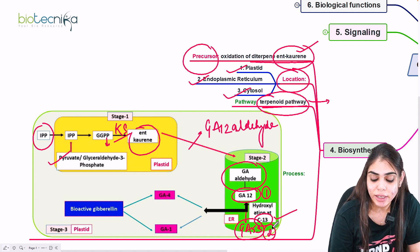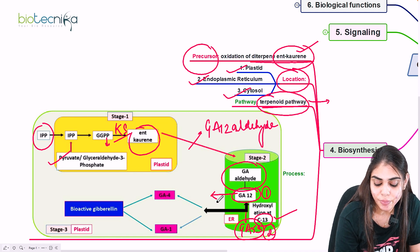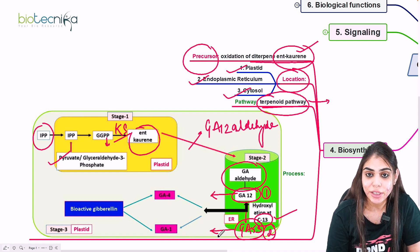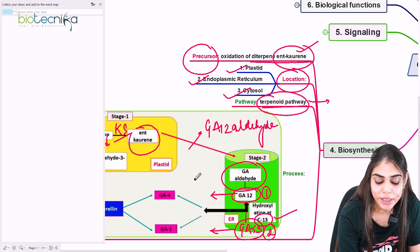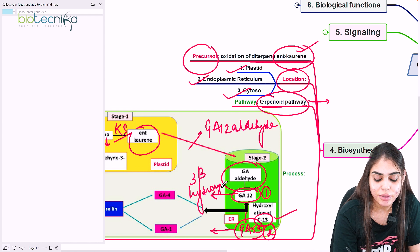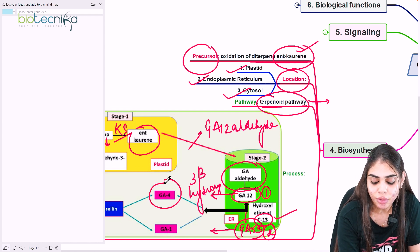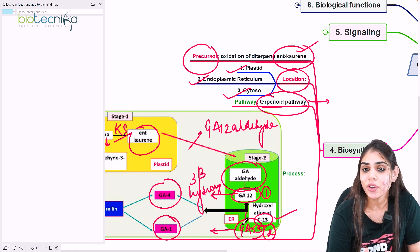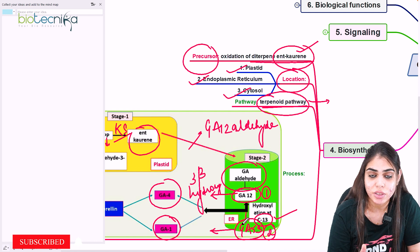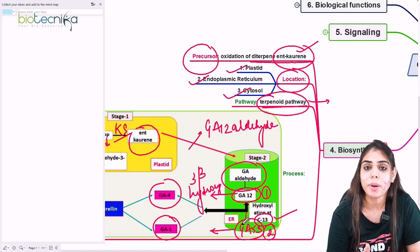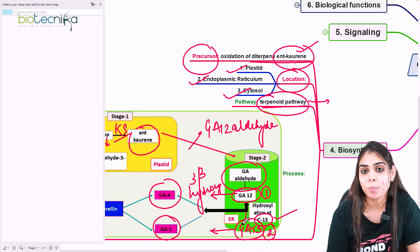Both GA12 and GA53 diffuse into the cytosol. Here happens a second hydroxylation reaction at carbon-3, known as 3-beta hydroxylation. This hydroxylation results in the formation of GA4 from GA12 and GA1 from GA53. We know there are four bioactive forms of gibberellin — GA1, GA3, GA4, and GA7 — and here we see two bioactive forms already formed. This is all about the synthesis of GA inside the plant cell.